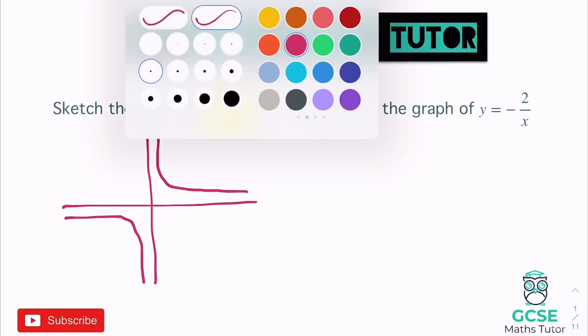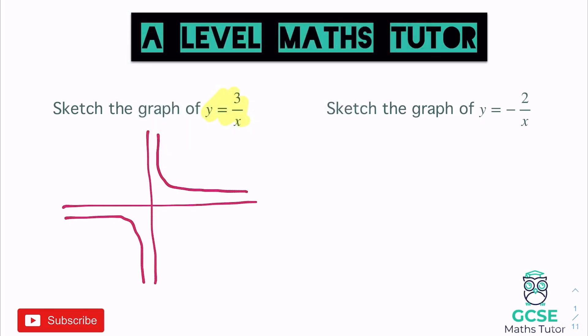Because the graph never touches the axes, we have something called asymptotes. On this reciprocal graph, one asymptote goes along the x-axis — we draw it with a dotted line and its equation is y = 0, since every y-coordinate on the x-axis is zero. There is also an asymptote going up the y-axis with equation x = 0, since all x-coordinates on that line are zero. So on the most basic level, those are our two asymptotes.